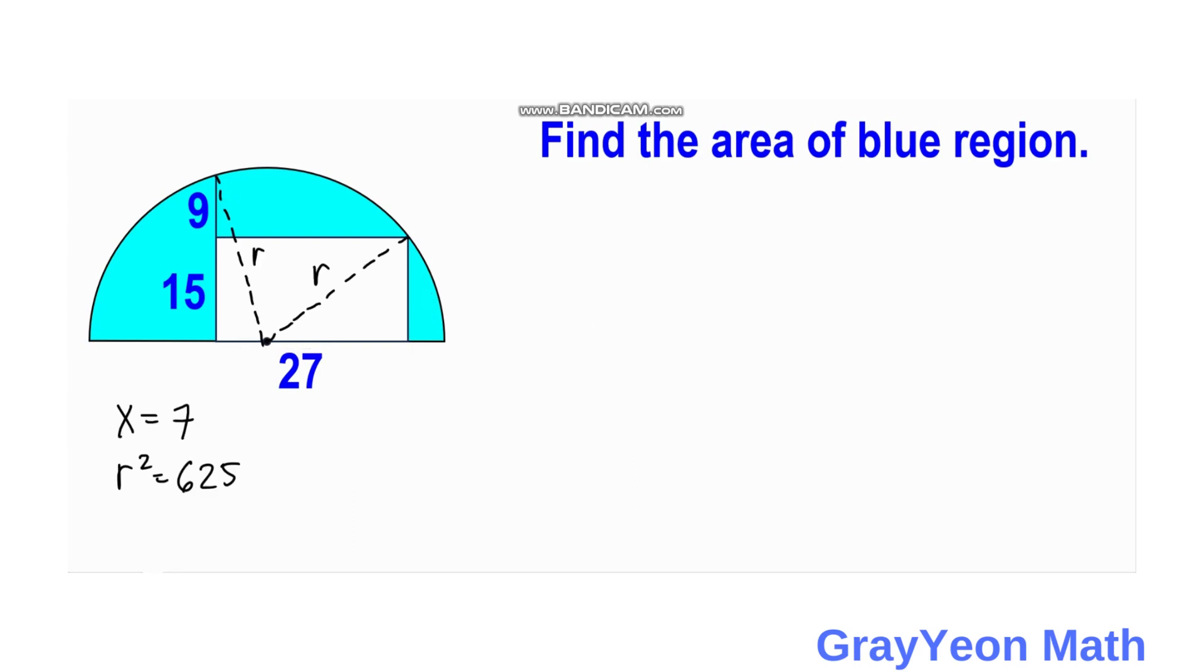For the final step we are now ready to find the area of this shaded region. So area is equal to Pi over 2 because this is a semicircle and we need to multiply it by R square minus the length and the width of the rectangle. So area is equal to Pi over 2 times 625 minus the length which is 27 and the height which is 15. And we need to get the LCD which is 2.